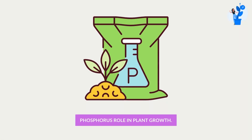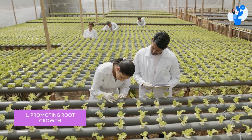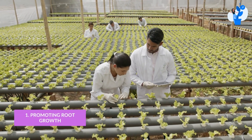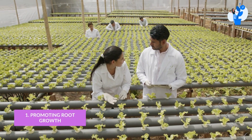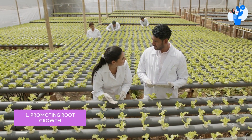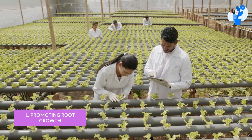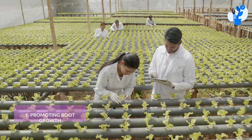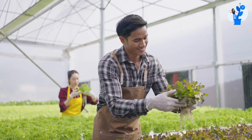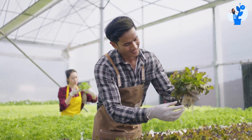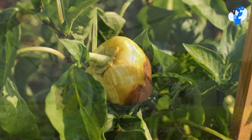There are several ways in which phosphorus plays a role in plant growth. Here are some of the key ways. The first one is promoting root growth. Phosphorus is necessary for the synthesis of ATP, which is an important source of energy for a plant. As a result, phosphorus is essential for promoting root growth in plants.